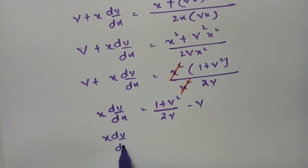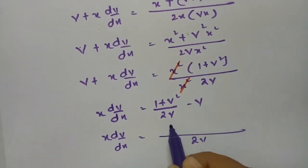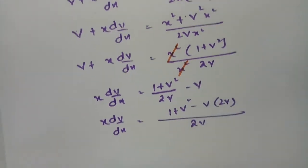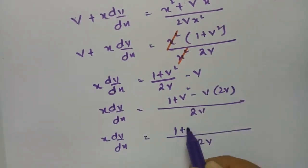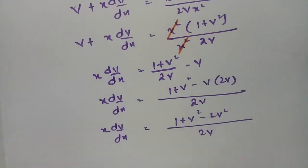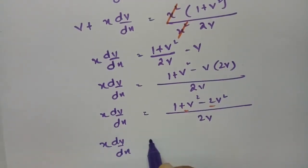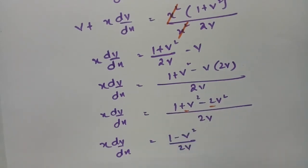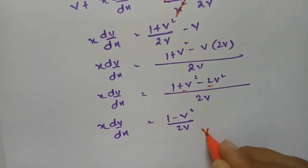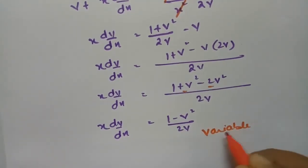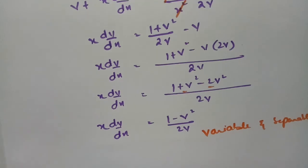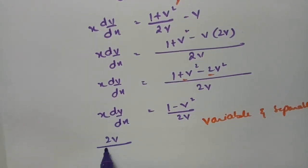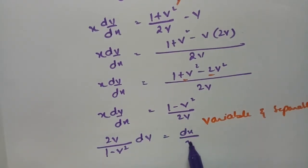Bringing v to the other side: x·(dv/dx) = (1 + v²)/(2v) − v. Taking 2v as LCM: x·(dv/dx) = (1 + v² − 2v²) / 2v. Simplifying: 1 + v² − 2v² = 1 − v², so x·(dv/dx) = (1 − v²) / 2v. Now we apply the variables separable method, separating v to one side and x to the other.